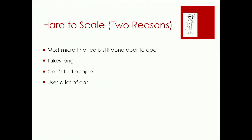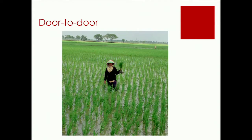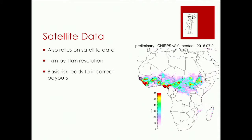But it's really hard to scale for two reasons. One: most sales are done door to door, as with anything in developing countries. That takes a long time — you can't find people because they're in fields, and you literally have to walk out and go find that person. How do you do that with thousands of people? The other issue is satellite data. Most of the indices we use to predict weather come from satellite data, and that data is only as good as its resolution — about one kilometer by one kilometer. Anything within that, you won't see variation. This leads to basis risk: sometimes the insurance pays out when it shouldn't, and sometimes it doesn't pay out when it should.